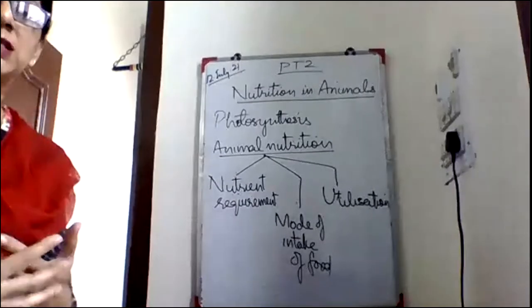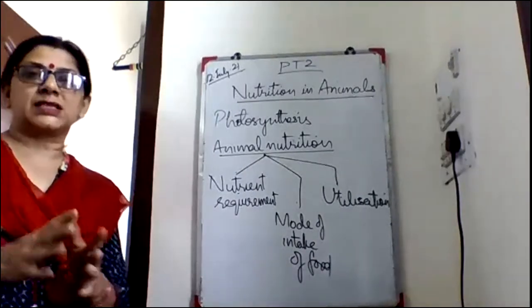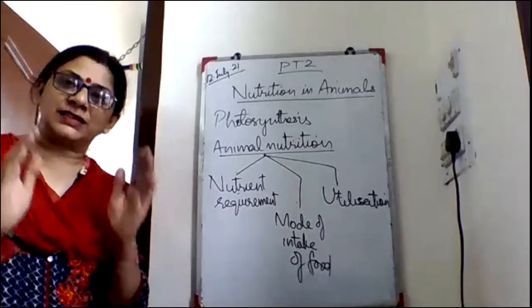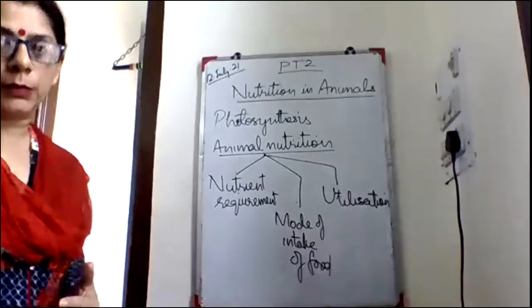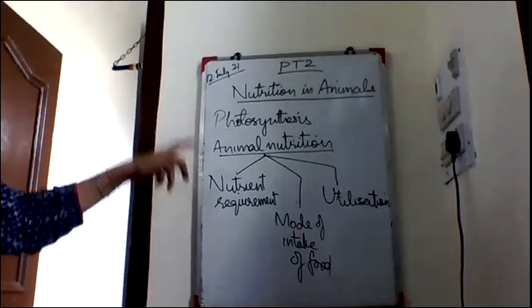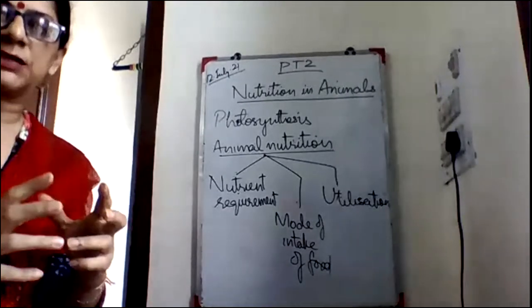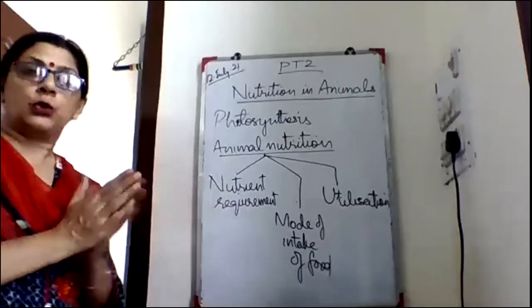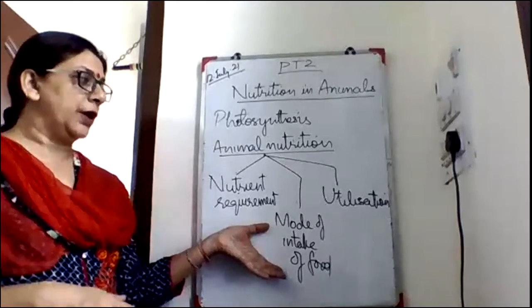In this chapter we are going to discuss nutrition in case of human beings and amoeba, and we will also discuss herbivores like grass-eating animals. We will study the human digestive system in detail. Different components of food are complex substances like carbohydrates, proteins, and fats, which are the nutrients required by the animal body for proper growth and development.